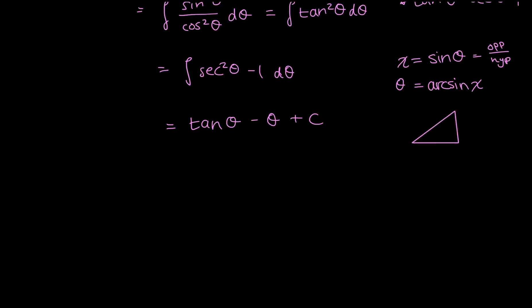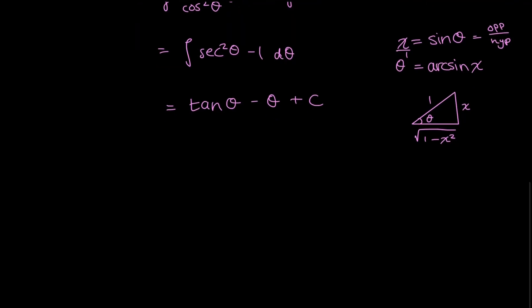So creating a triangle, I have my angle theta here. I know my sine theta equals opposite over hypotenuse, which equals x. So this is like x over 1. So my opposite would be equal to x, and my hypotenuse would be equal to 1. Finding that missing side, I get that it's square root of 1 minus x squared. This is just using the Pythagorean formula. So I know that tangent theta must be equal to the opposite over the adjacent. My opposite side is x, and my adjacent side is the square root of 1 minus x squared. Now I have all my pieces.